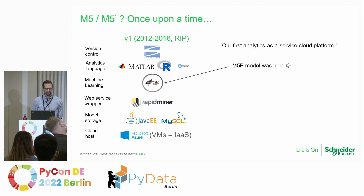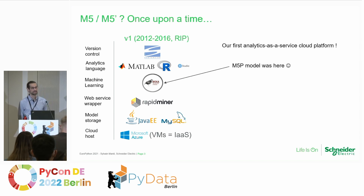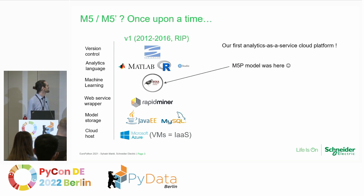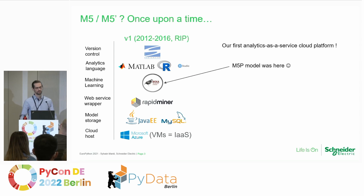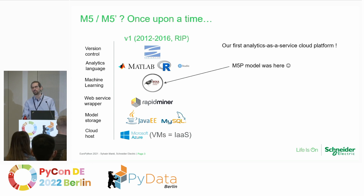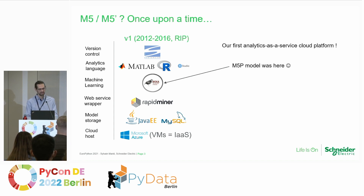So what about M5 and M5 Prime? When I was starting to write this talk, I tried to remember when it all started — it was 10 years ago already. At that time I was developing our first analytics as a service cloud platform, not based on Python but on an open source stack named RapidMiner, embedding a few plugins including the WEKA library for machine learning in Java. M5P was quite a famous model there, and I was coming from more traditional optimization-based machine learning — support vector machines or neural networks — so I was a bit doubtful about decision trees, but on some examples it was working quite nicely, so we used it.